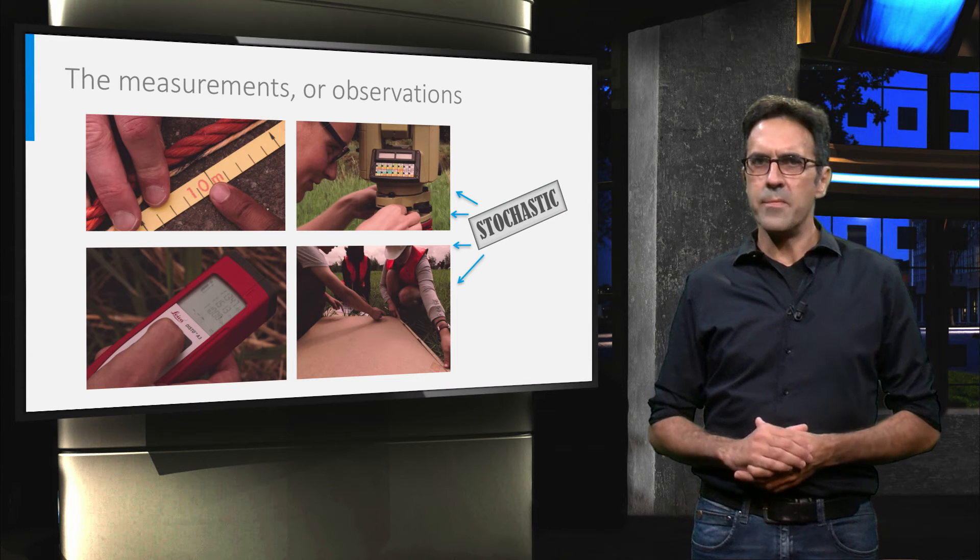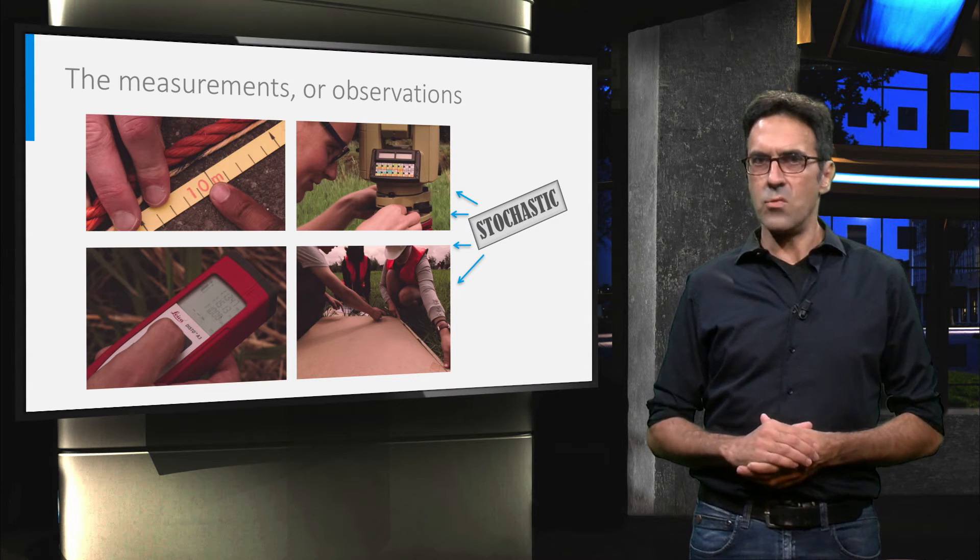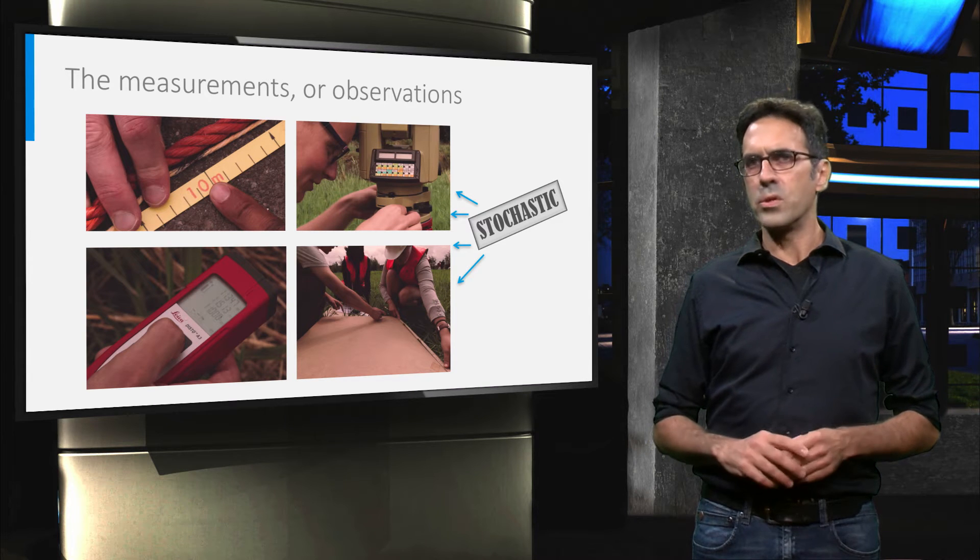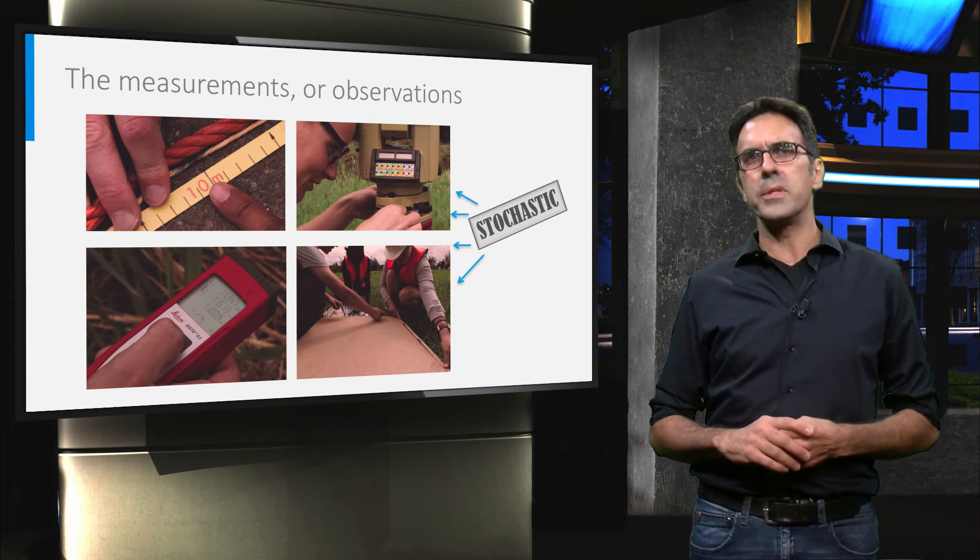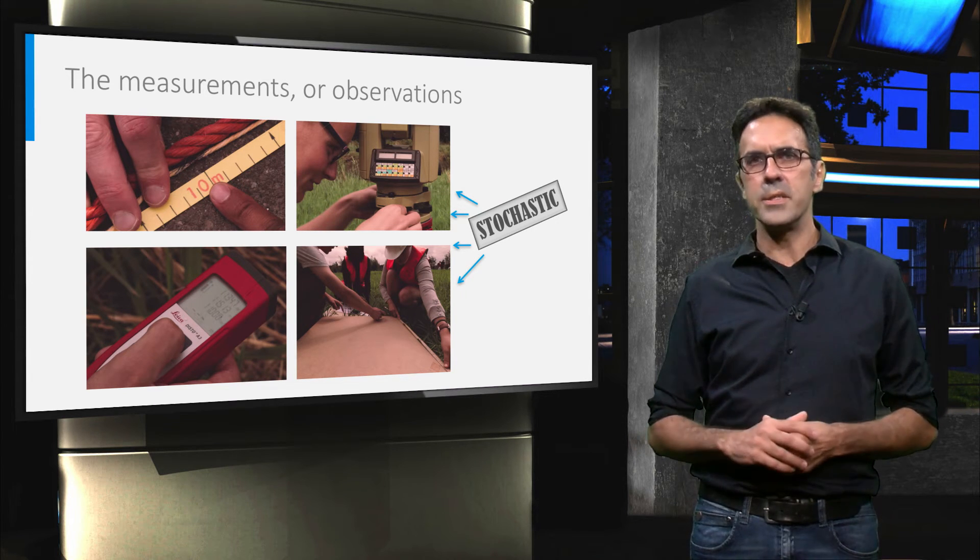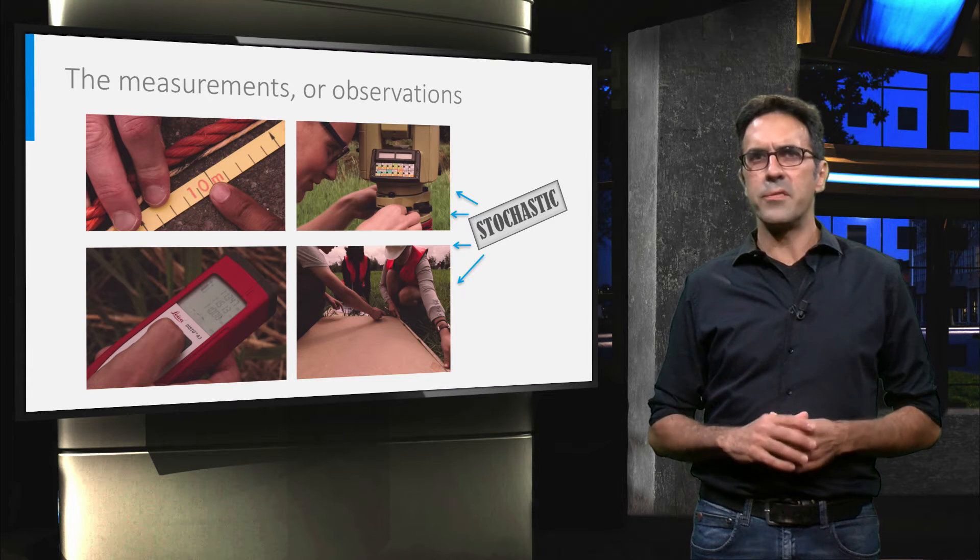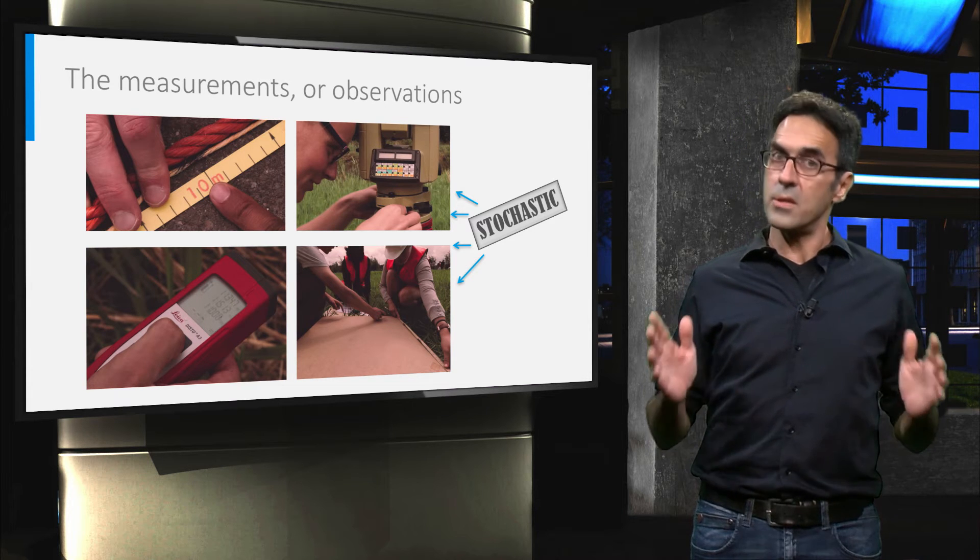An alternative name for a stochastic variable is a random variable. Here, the word random should not be interpreted as arbitrary, as in colloquial language, but as a variable which can have a value within a certain range.